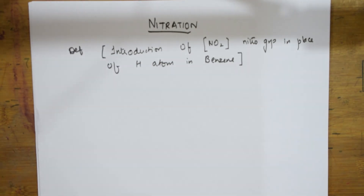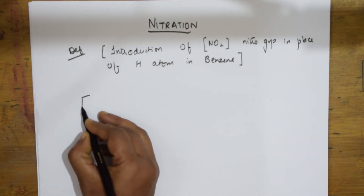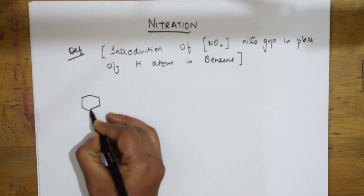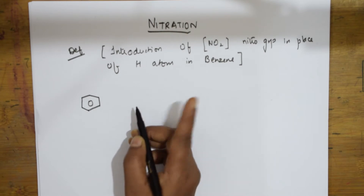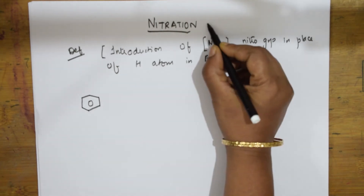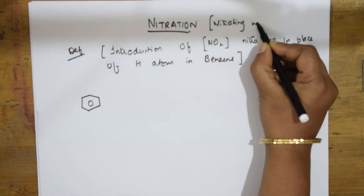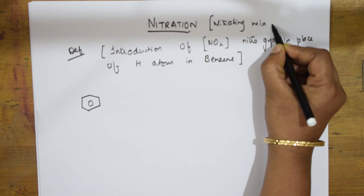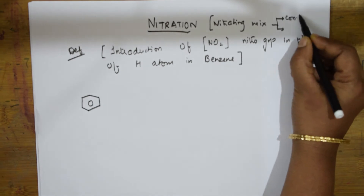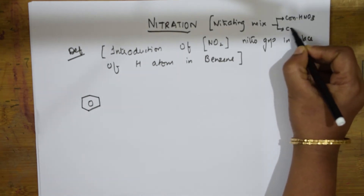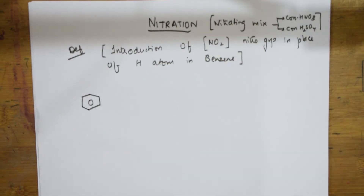Now we are going to start with the reaction. Whenever you are doing the nitration process, we are going to first take benzene. Along with this, we are going to introduce an important thing: the nitrating mixture. This is the main important thing. For nitration, you require a nitrating mixture. This nitrating mixture consists of two acids - concentrated nitric acid and concentrated sulfuric acid. Nitration occurs in the presence of this nitrating mixture only.